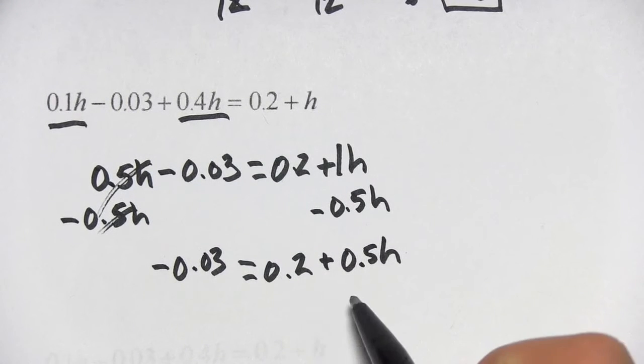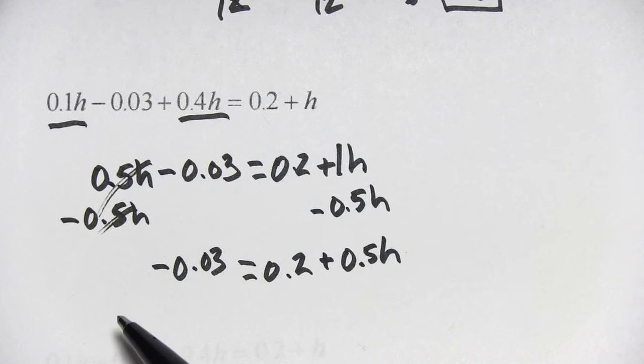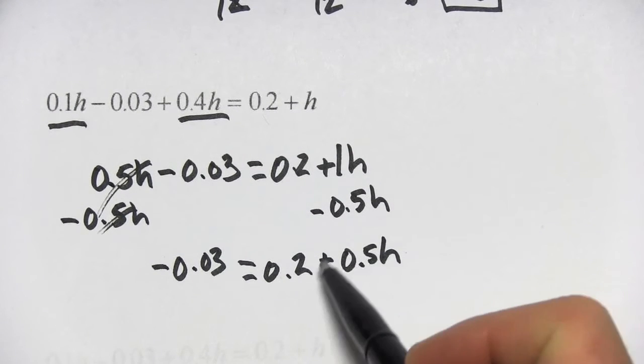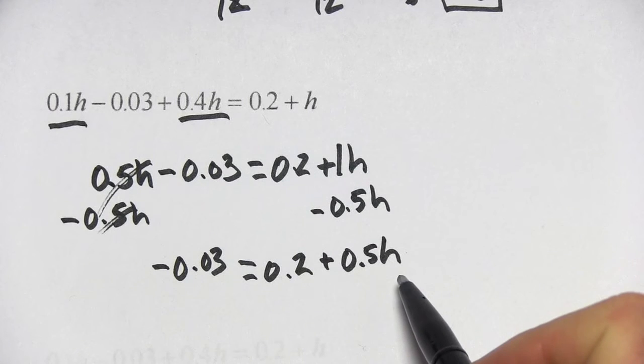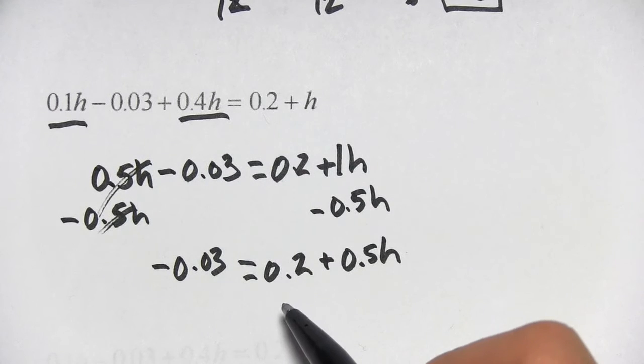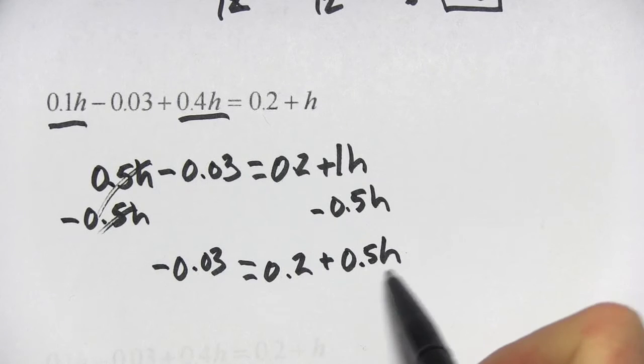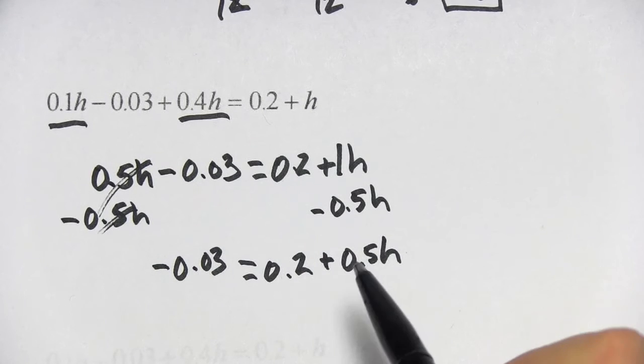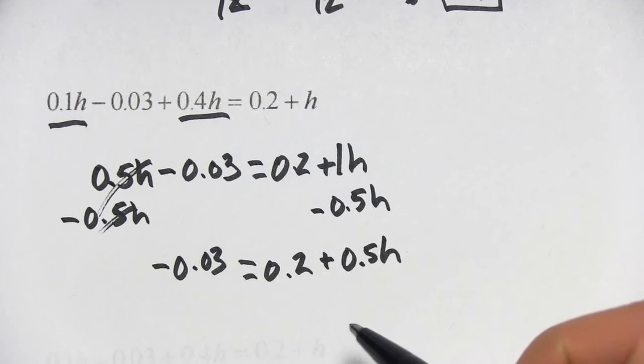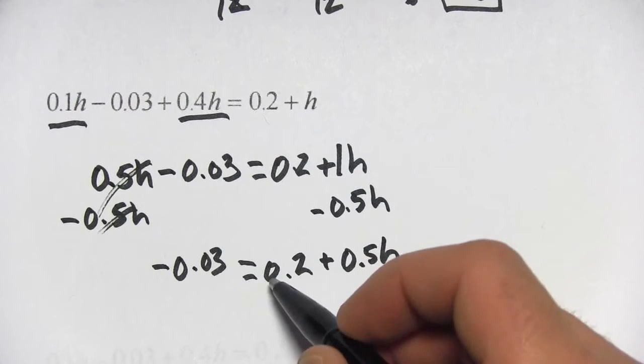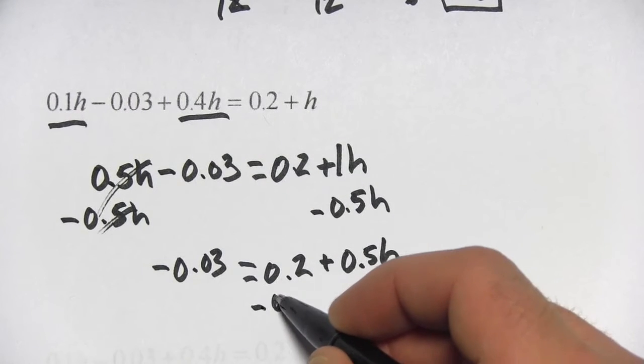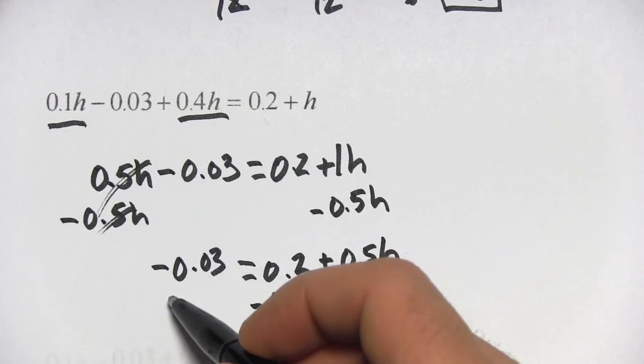Now we've got a situation, although usually you might be used to seeing the variable on the left side of the equation. It doesn't matter. We've got our variable term, our h term. We've got another number hanging out and then a number over on this side. So we want to get the h term, the variable term, alone. So let's get rid of this 0.2. I can do that by subtracting 0.2 from both sides.